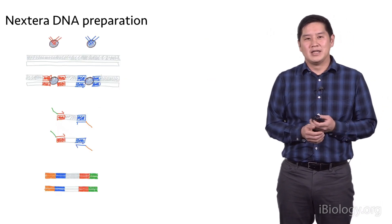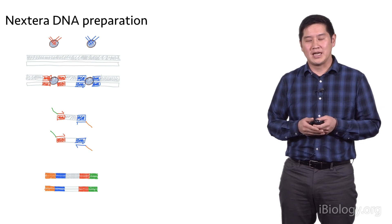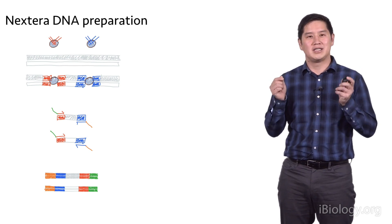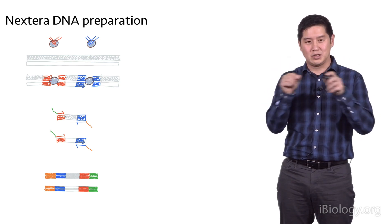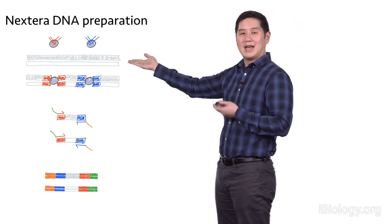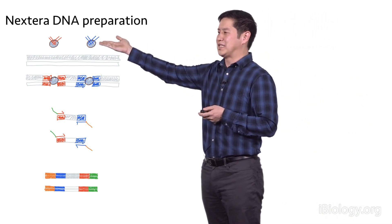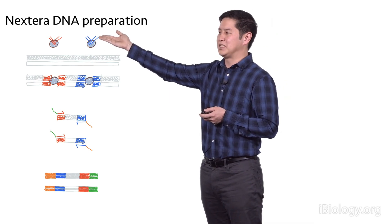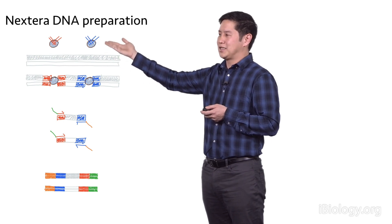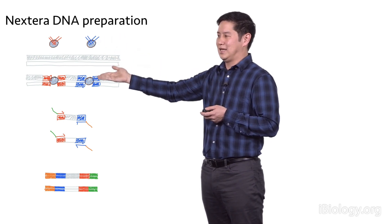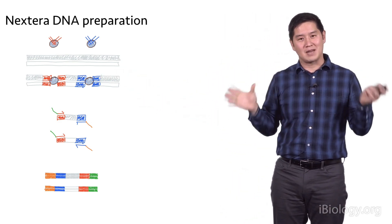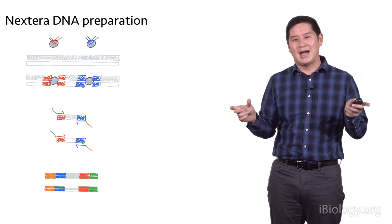Another method of preparing DNA libraries is this Nextera process, which takes advantage of this property of transposases that allow them to insert DNA molecules into other large pieces of DNA. If we start with genomic DNA that hasn't been fragmented, and we add these transposase enzymes that have the adapter sequences loaded onto them, these transposases will insert these DNA sequences into the DNA and fragment them into smaller bits. In a single reaction, you fragmented the DNA and added partial adapters.